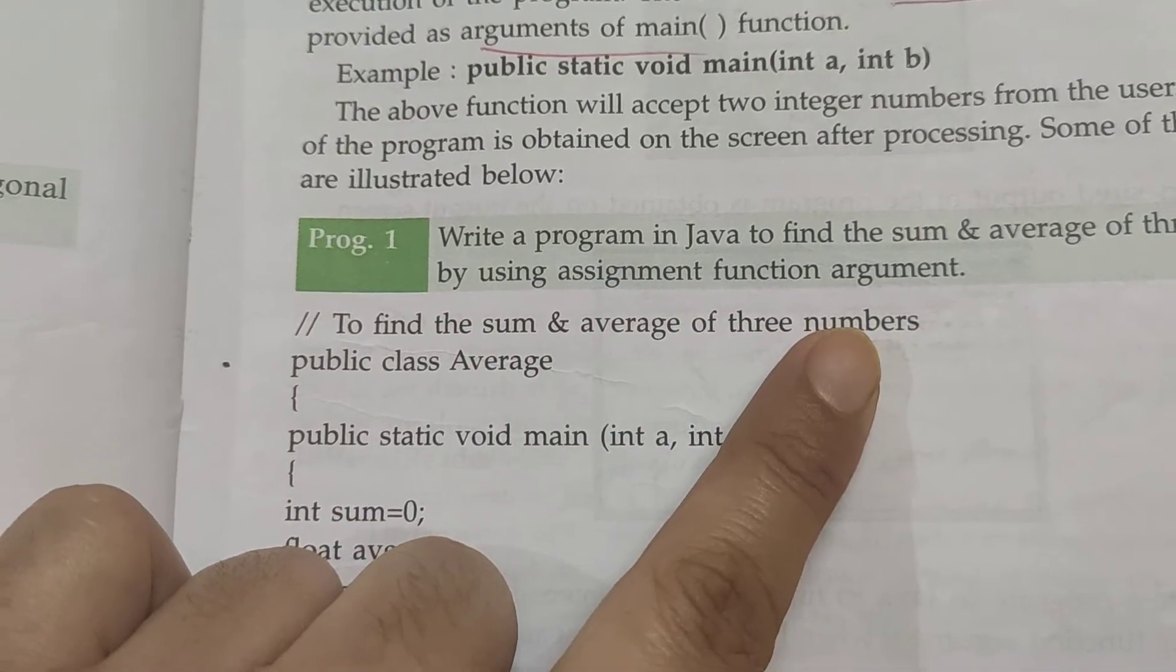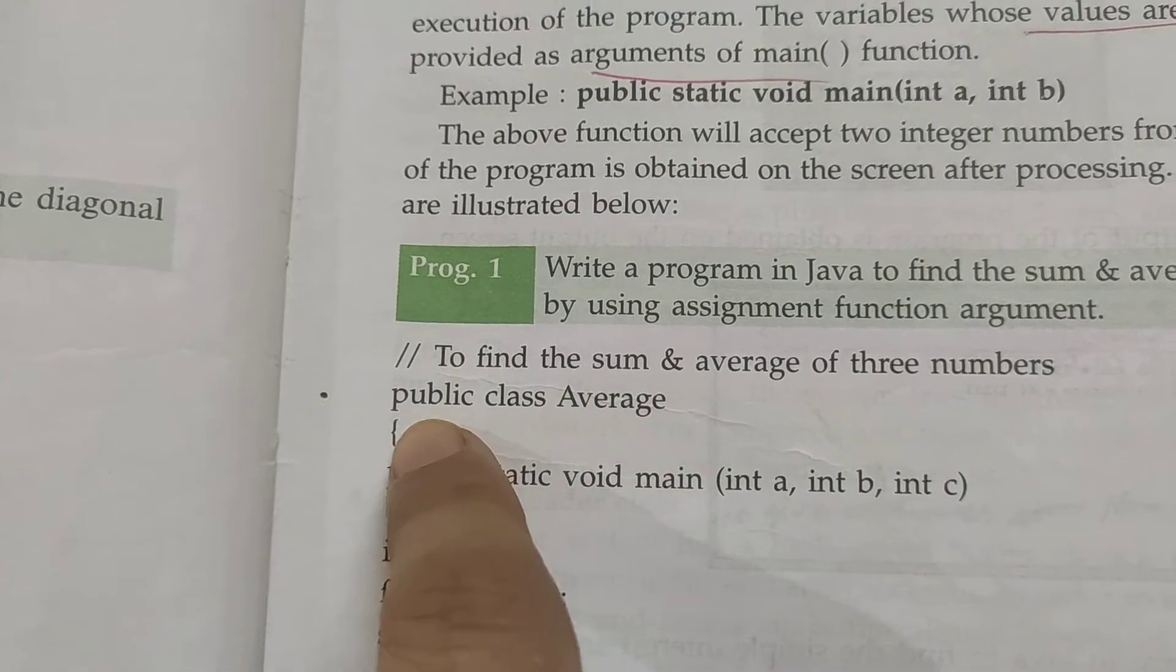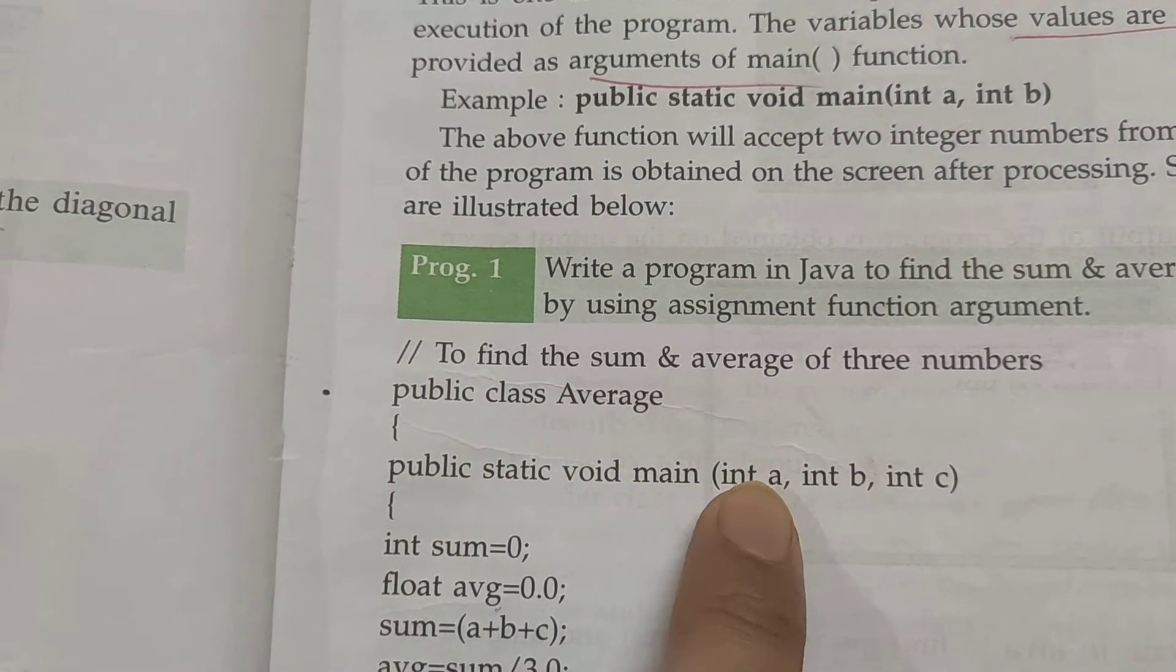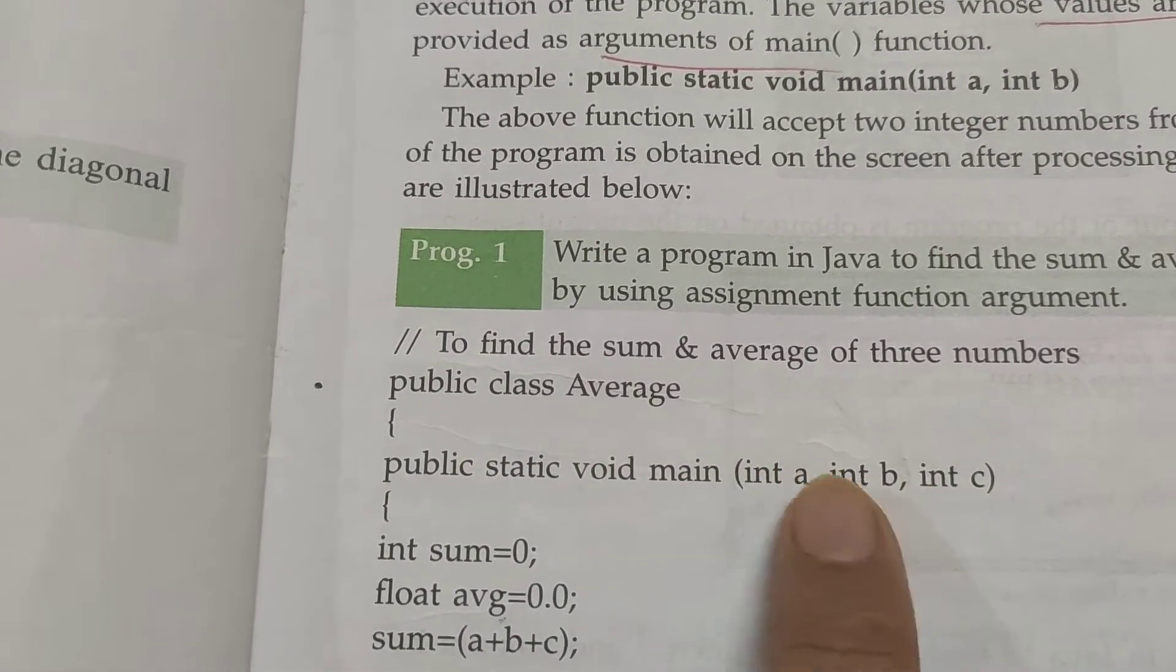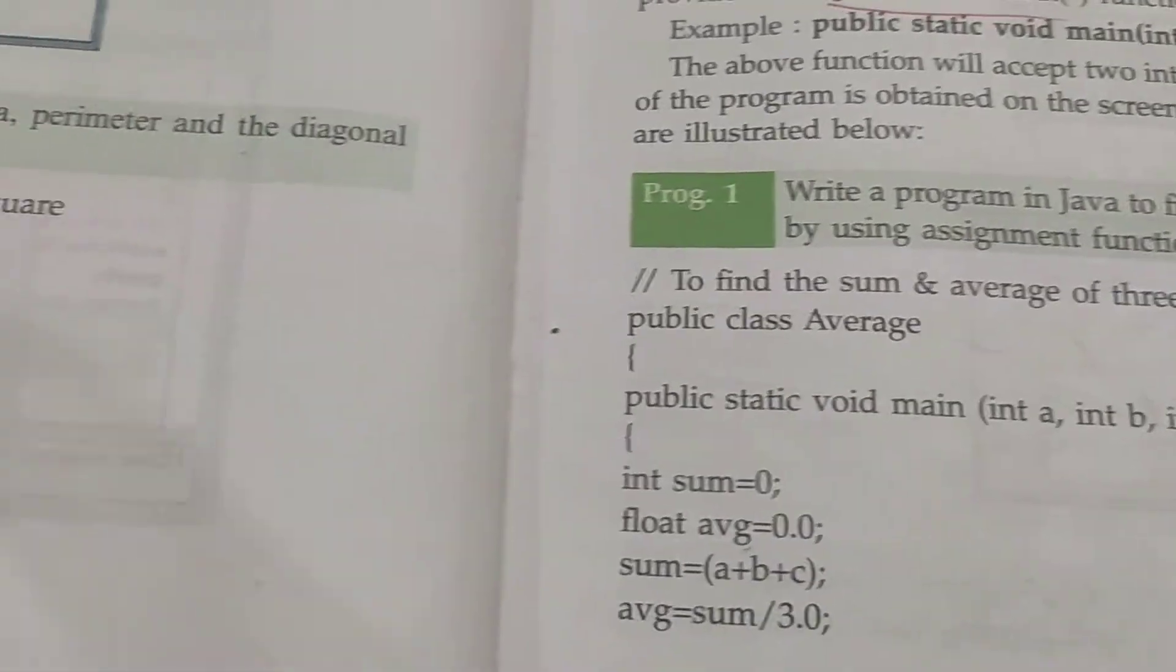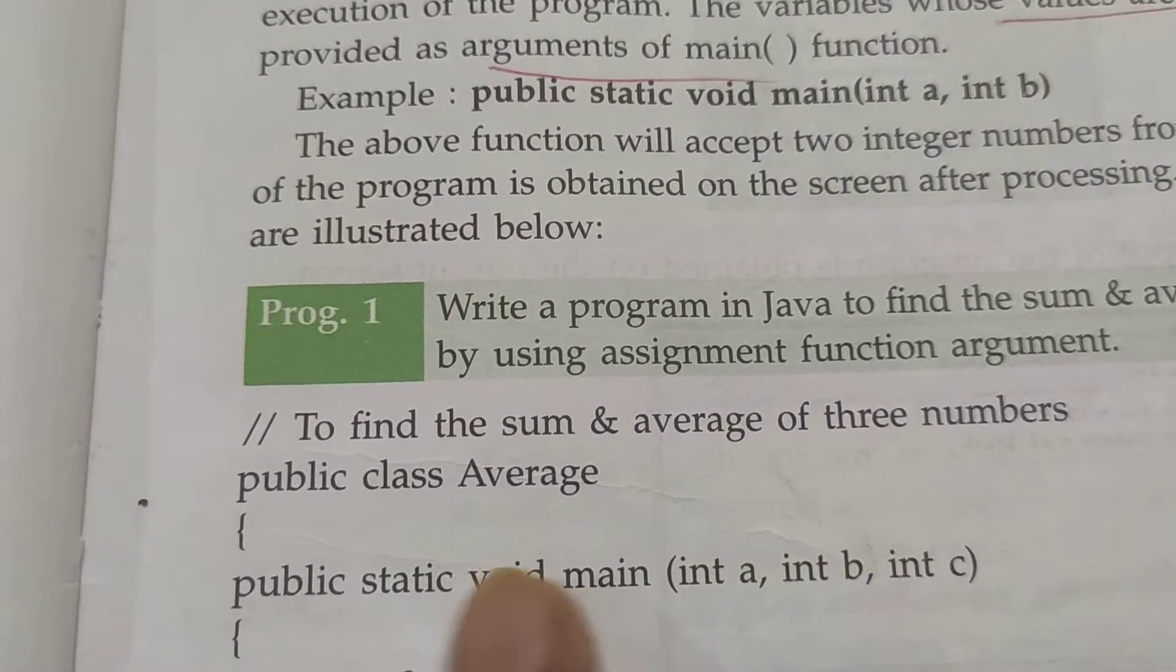Let's see how we create this program. Suppose we have to find sum and average of three numbers. We have given this comment line: sum and average of three numbers. Public class Average, we have written here main function. We have to input three numbers, so we have to do this through function arguments instead of the assignment operator method.